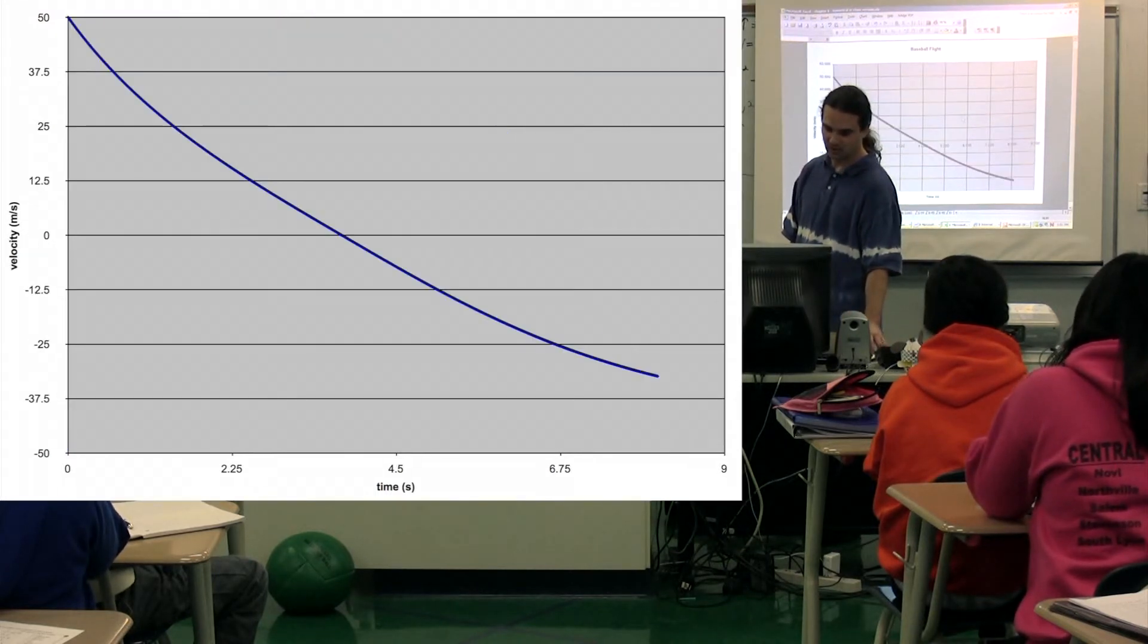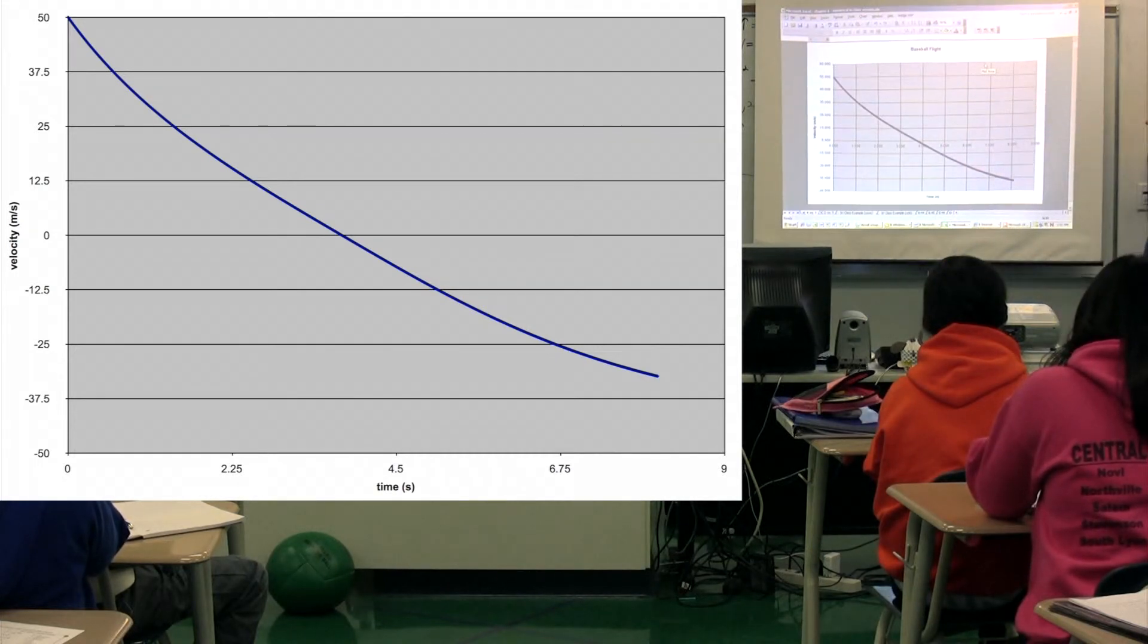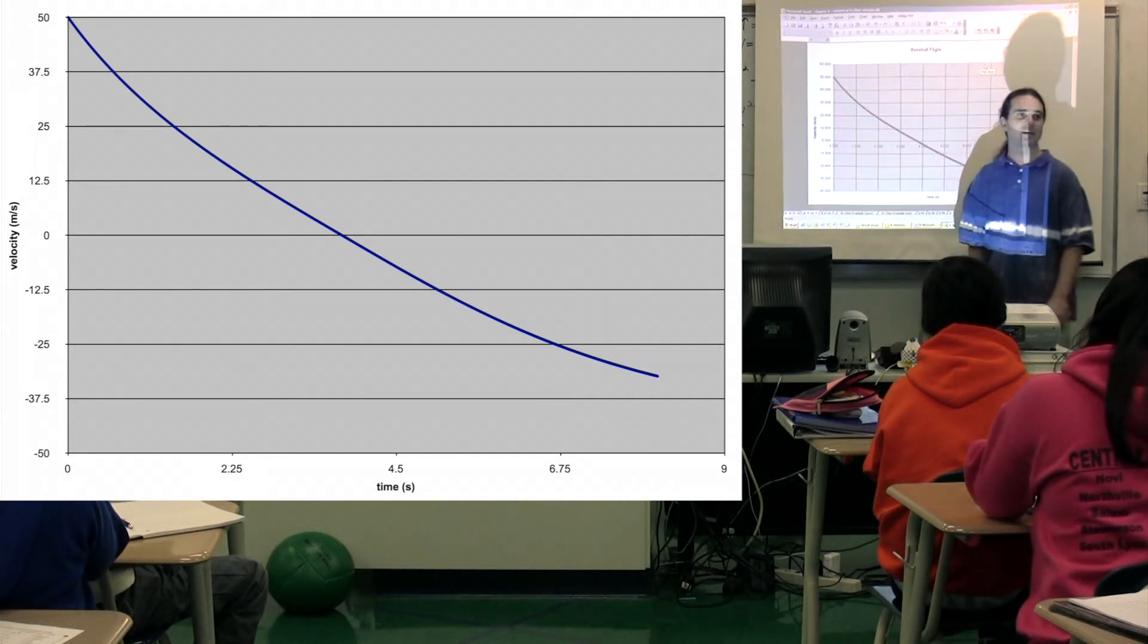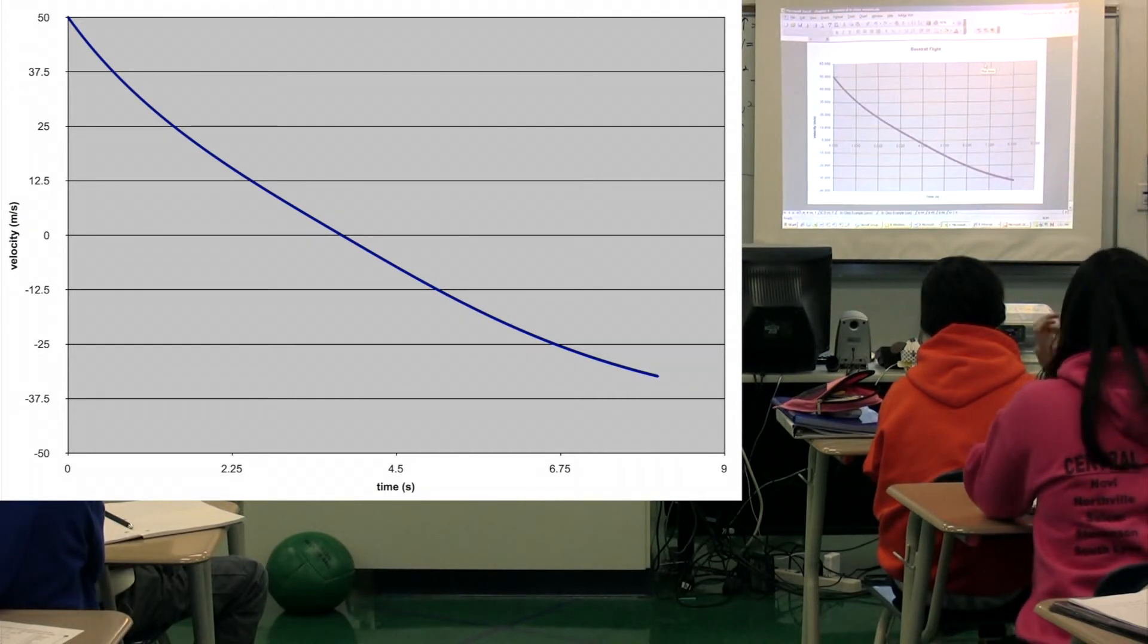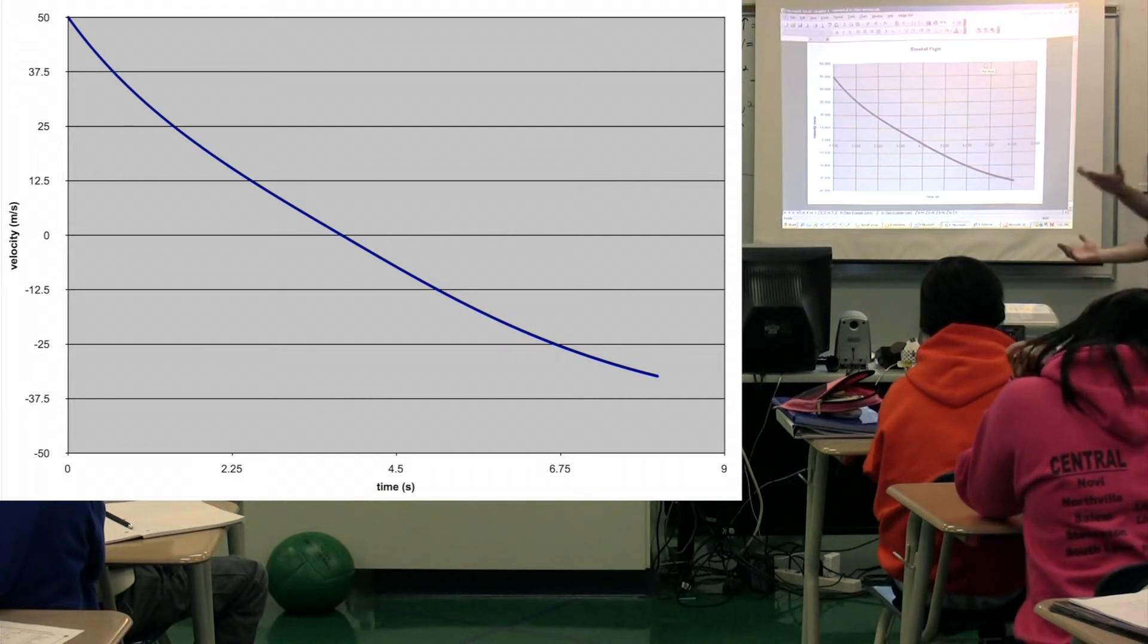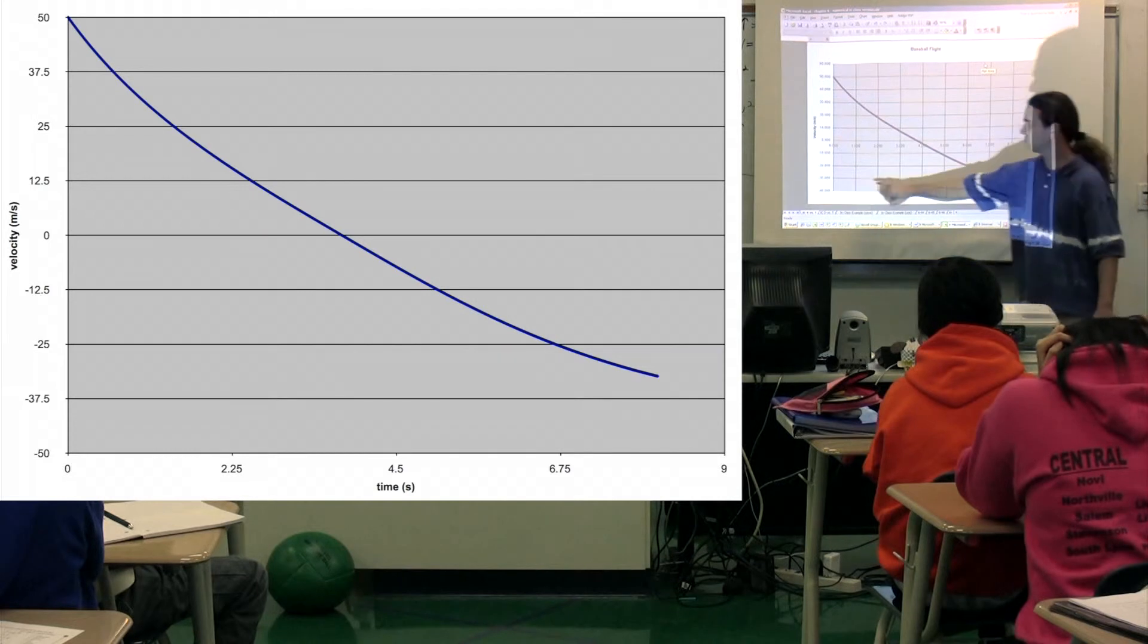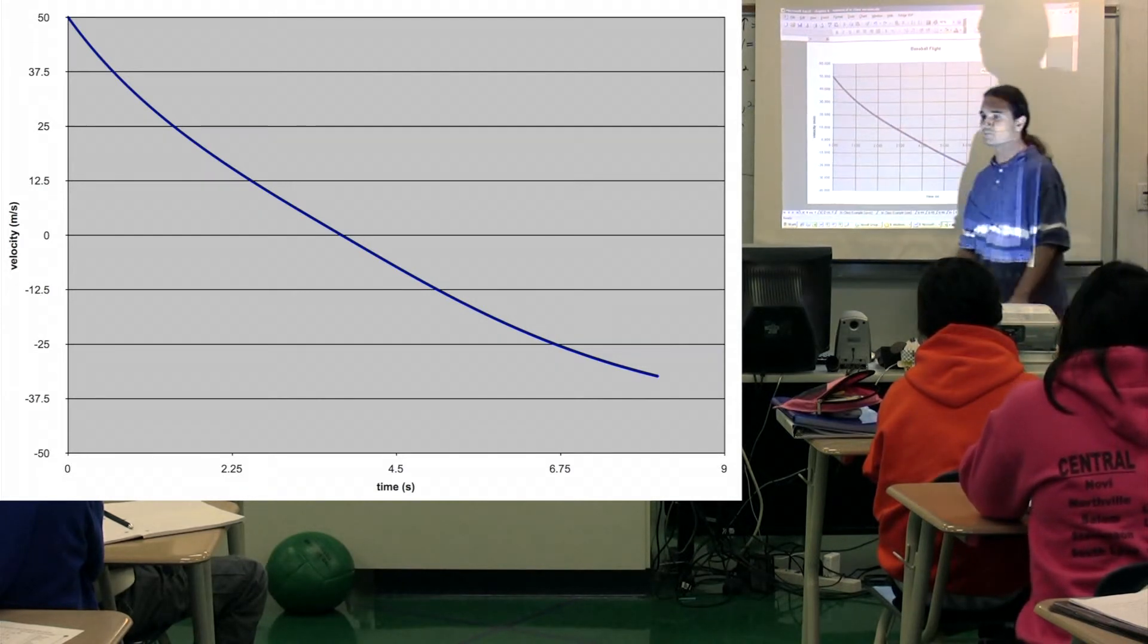The velocity as a function of time looks like this. You can see it starts out at 50. What would the final velocity be if we had no air resistance? Heather? 50. 50 down, negative 50. So, but it doesn't end there. It only ends at, like, 30, negative 33 or so. So there's a big difference between the two.